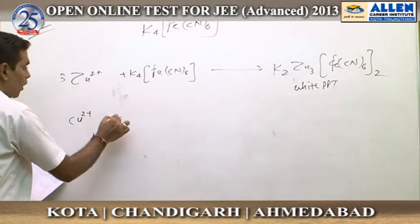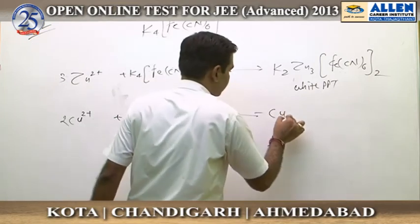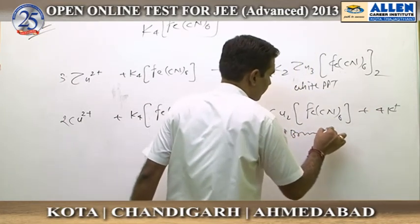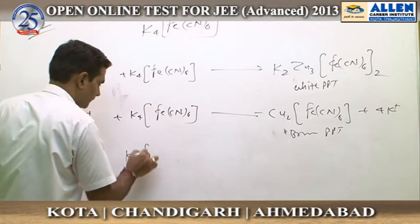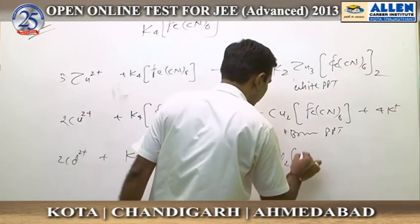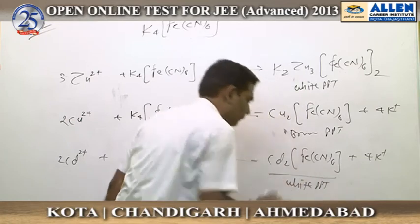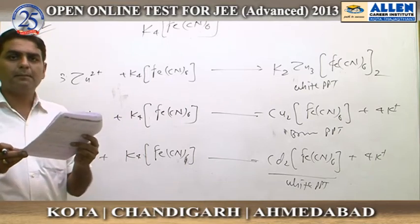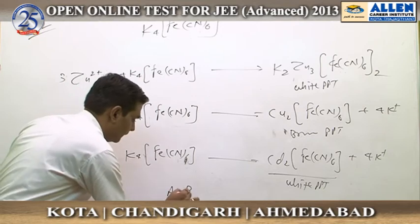Option B — copper (Cu2+): it is also identified by potassium ferrocyanide because it produces a chocolate brown precipitate when treated with K4Fe(CN)6. Option C — cadmium (Cd2+): it also produces a bluish-white precipitate, generally called white precipitate, which is Cd2[Fe(CN)6] plus 4K+. All three — zinc, copper, and cadmium — produce precipitates with K4Fe(CN)6, but Al3+ does not react with K4Fe(CN)6 to form any precipitate. Therefore the answer is A, B, and C.